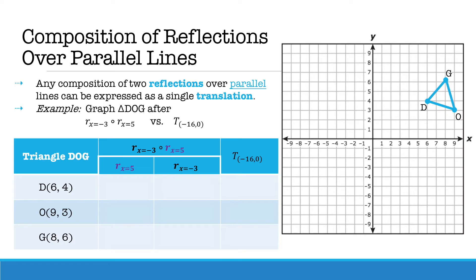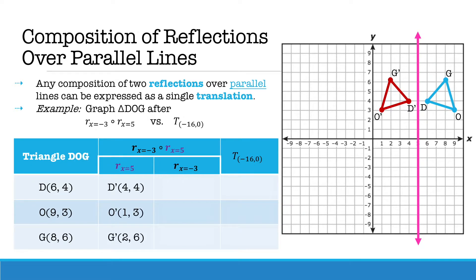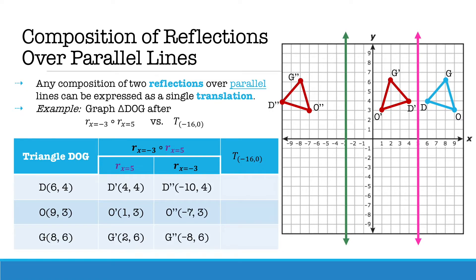Let's now take a look at composition of reflections over parallel lines. Any composition of two reflections over parallel lines can be expressed as a single translation. Here we have triangle DOG. We are first going to reflect it over the line x equals 5, then reflect it over the line x equals negative 3. This is the same outcome as if we were to translate our image 16 units to the left.